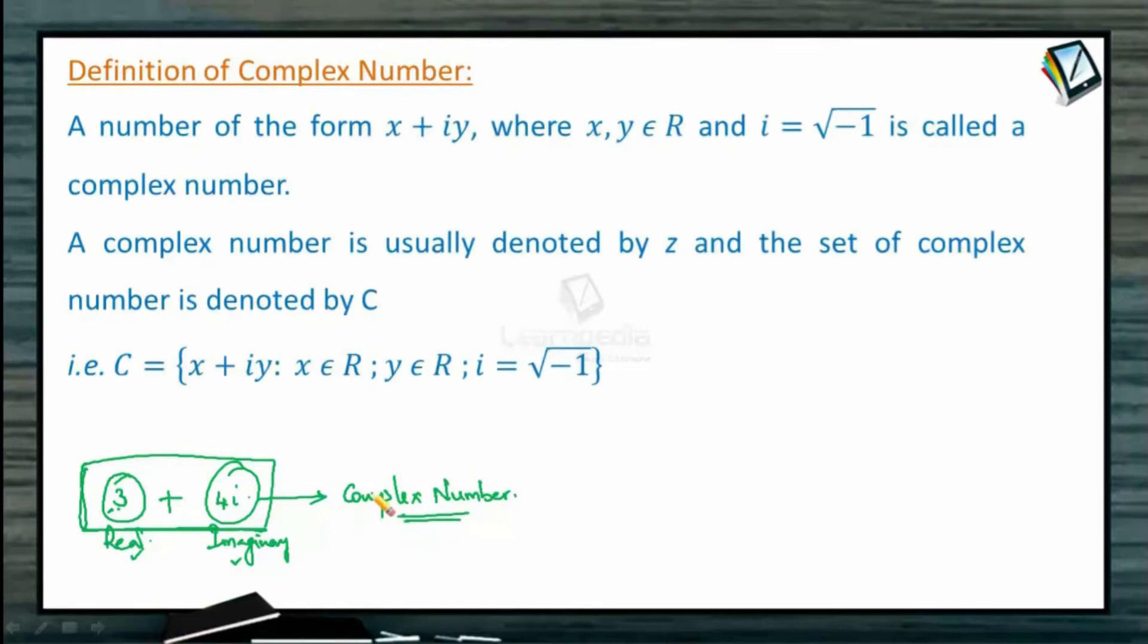If you look at the definition, a number of the form x plus iy, where x is a real number and y is a real number, and our i value is square root of minus 1.